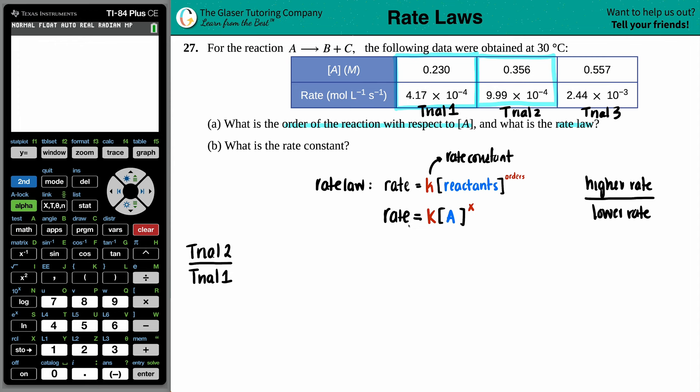So for trial two, I'm just going to use this general formula to plug in for my trial two numbers. The rate that they gave me in trial two was 9.99 times 10 to the negative fourth equals the K value. We don't know what that is yet, but that's okay. Times by the concentration of the A value, which was the 0.356. And with numbers, I mean, you can use brackets, but just know that when you're doing the math, this is the same thing as parentheses, doesn't really matter. And that's going to be raised to the X value. We're going to do the same thing for trial one. So now trial one's values are 4.17 times 10 to the negative fourth equals the K value times by the values raised to the X. And the number for A for trial one is 0.230.